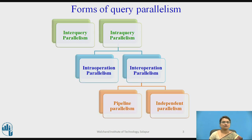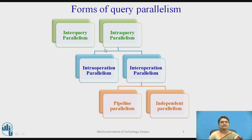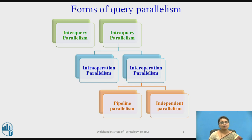Talking about the forms of query parallelism, there are basically two types: inter-query parallelism and intra-query parallelism. Intra-query parallelism is further divided as intra-operation, where every individual operation is parallelized, and inter-operation, where the multiple operations within a query are parallelized. Inter-operation parallelism is divided as pipeline parallelism and independent parallelism.